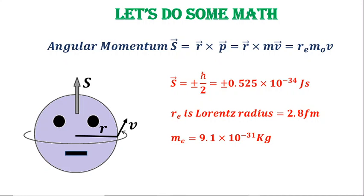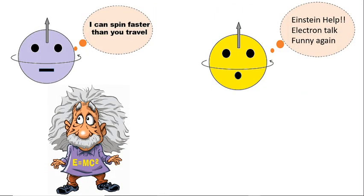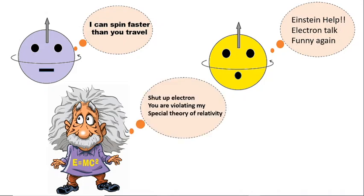So what if we put all these numbers together? We may end up with a velocity which is equal to 67c. What does it mean? It means the speed of rotation on the surface of the electron is more than 67 times the speed of light, which obviously violates Einstein's theory of special relativity, which states nothing in the universe can move faster than the speed of light.